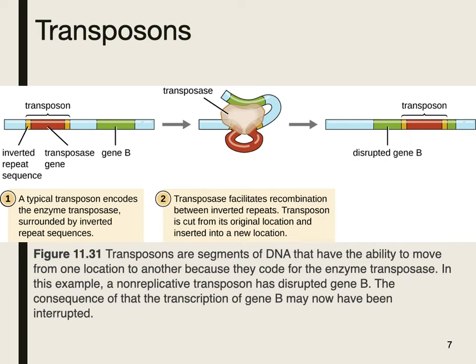This figure shows the transposon. There are usually repeat sequences that indicate where a transposon is. The transposase enzyme is able to undergo recombination — similar to the RAG enzyme in immunology for T cell and B cell receptor recombination — holding the genetic information in place, then cleaving and clipping it so it can insert in another location. You can see here how the transposon has been inserted into gene B, so gene B is no longer going to code for what it needs to. In some cases these transposons are disruptive and can lead to issues.